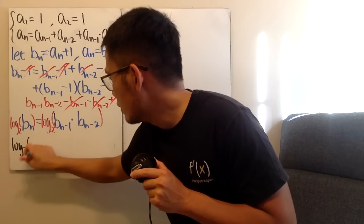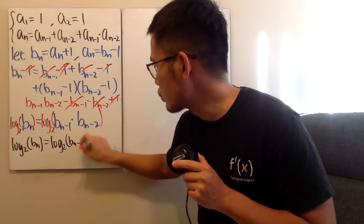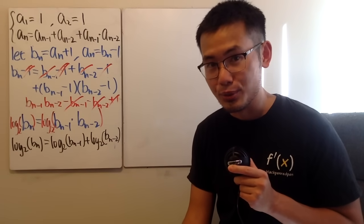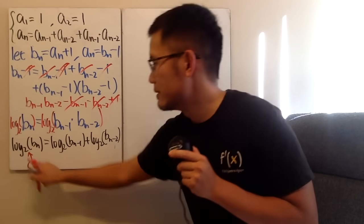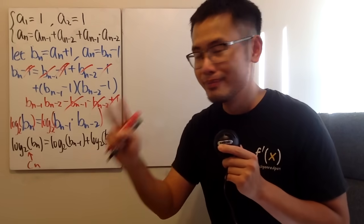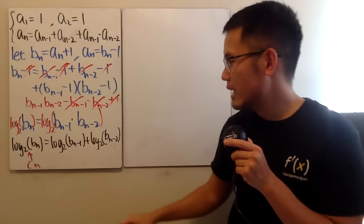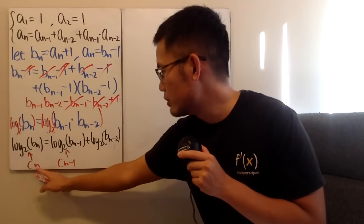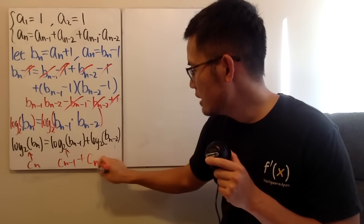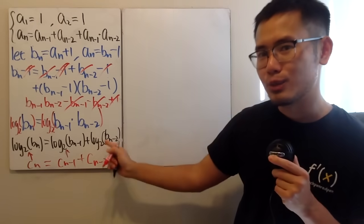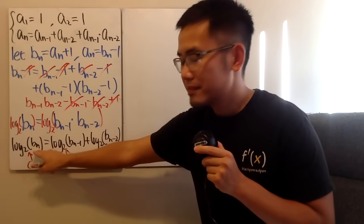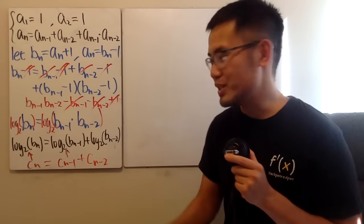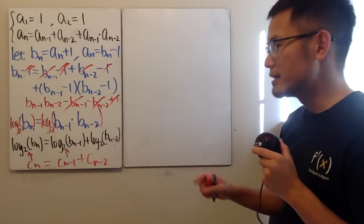We have log base two of b_n equals log base two of b_{n-1} plus log base two of b_{n-2}. Now let's do another substitution: let c_n equal log base two of b_n. Since b_1 is two, log base two of two is one — very nice. So c_n equals c_{n-1} plus c_{n-2}, and with c_1 equals one and c_2 equals one, we actually end up with a Fibonacci sequence for c_n.